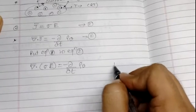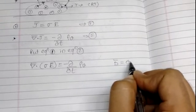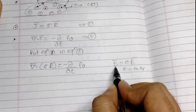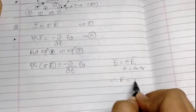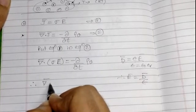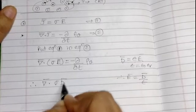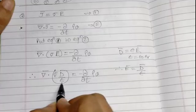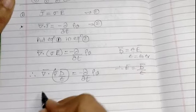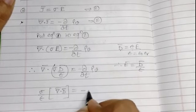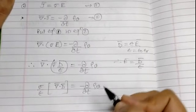We know that electric flux density D-bar equals epsilon times E-bar, where epsilon equals epsilon-0 times epsilon-r. Therefore E-bar equals D-bar divided by epsilon. Substituting into the continuity equation, we get del-bar dot (sigma times D-bar divided by epsilon) equals minus del-rho-V by del-t. Since sigma and epsilon are constants, we take them out: (sigma over epsilon) times del-bar dot D-bar equals minus del-rho-V by del-t.